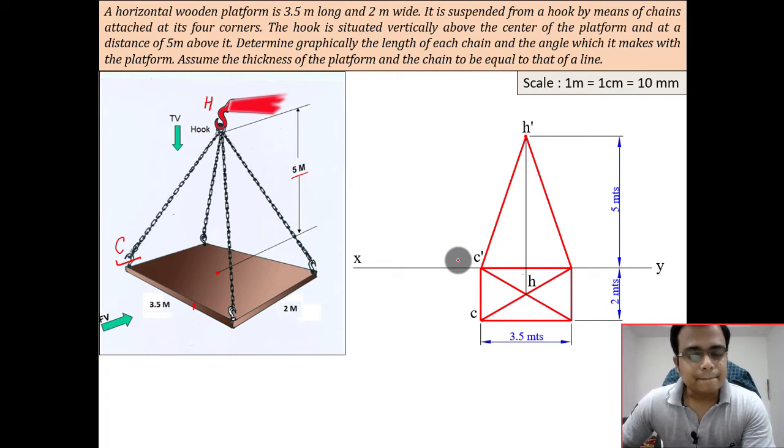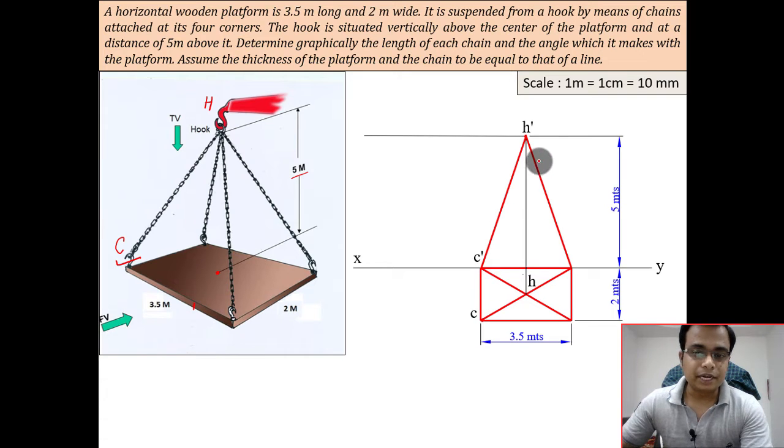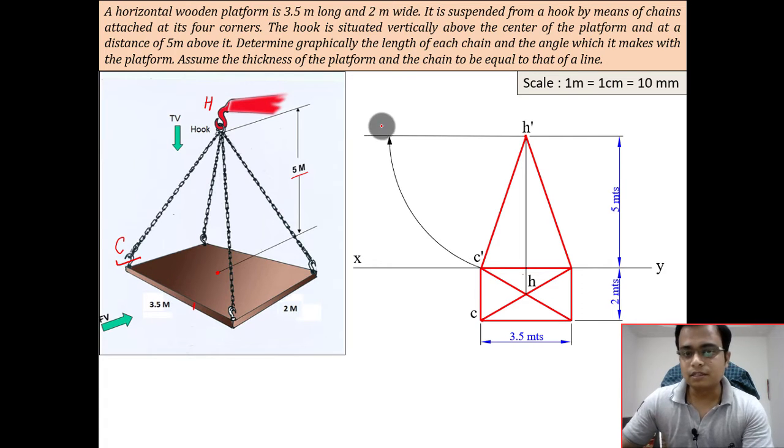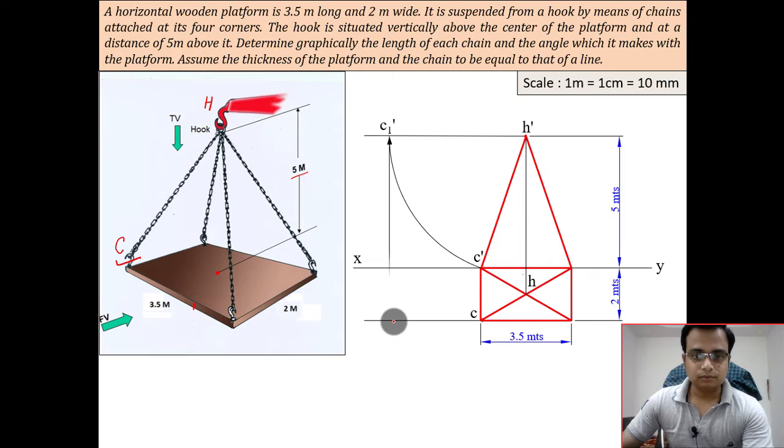What we're supposed to find is the exact true length of this chain. This can be done very easily. Either rotate the front view or rotate the top view, that is H dash C dash. Here I'm rotating the front view, keeping H dash fixed and moving C dash. This is the new location C1 dash.